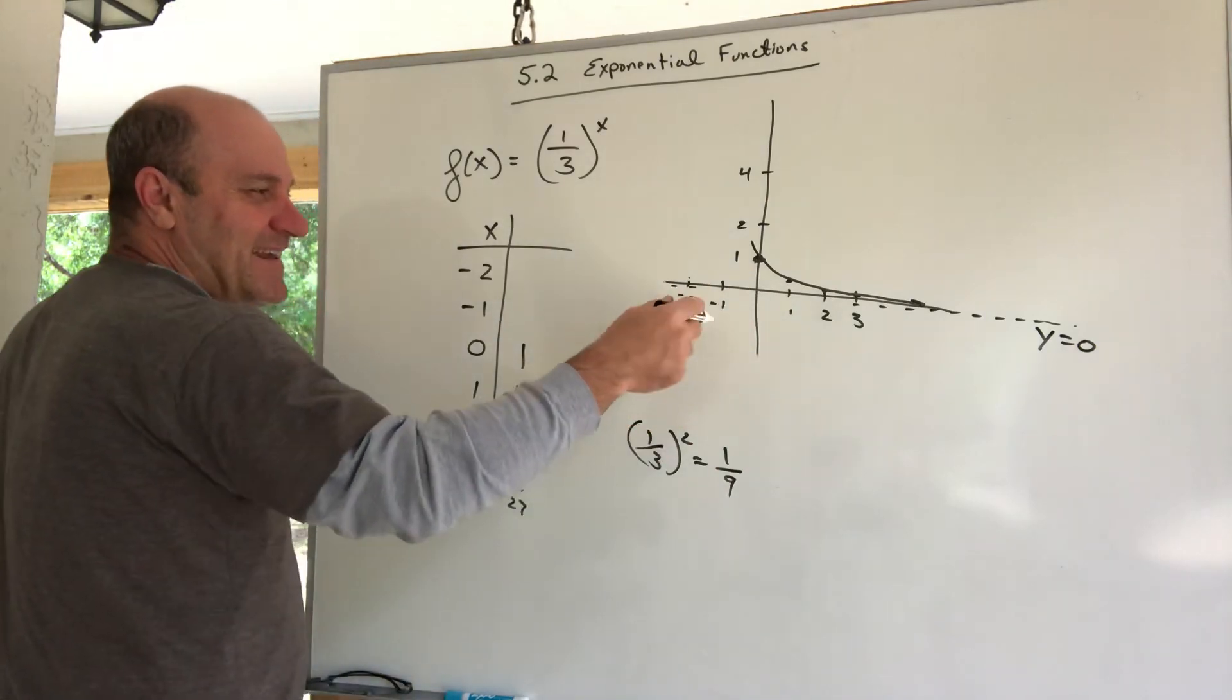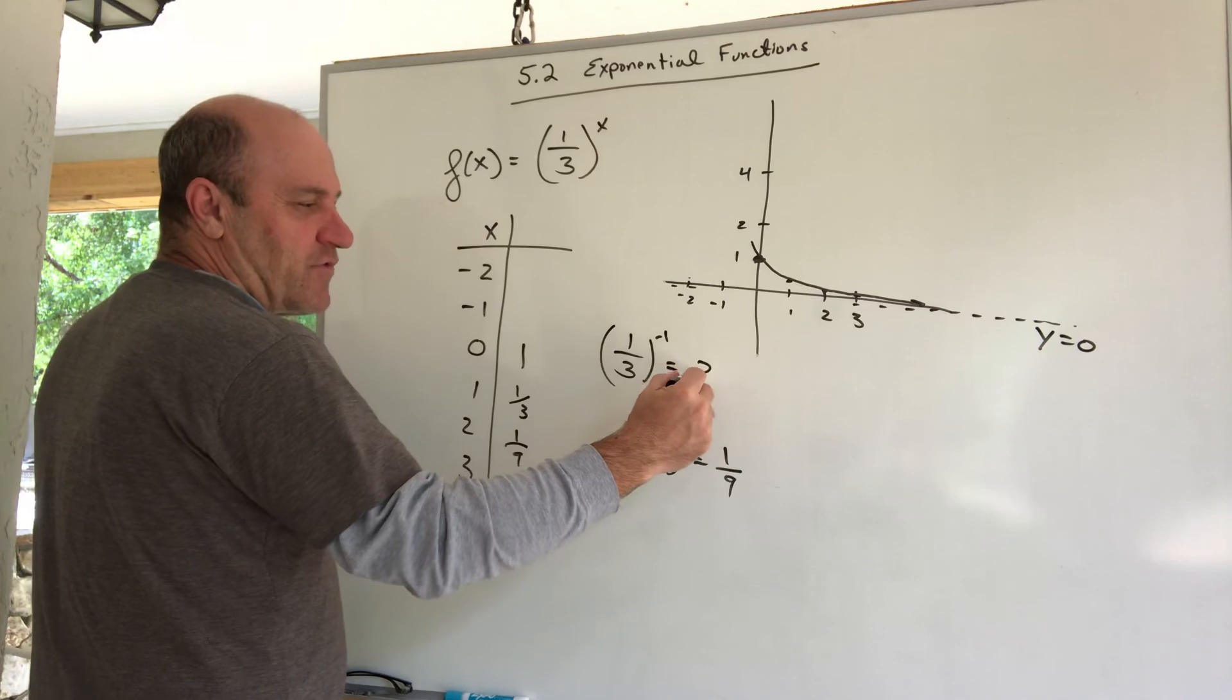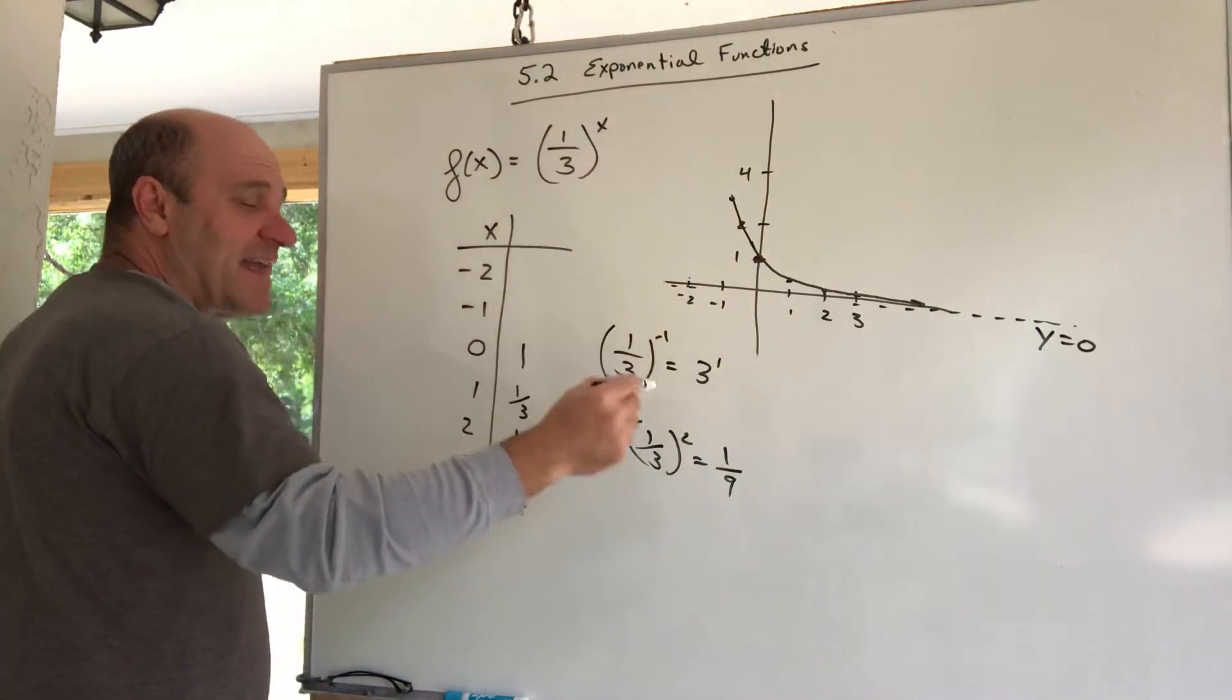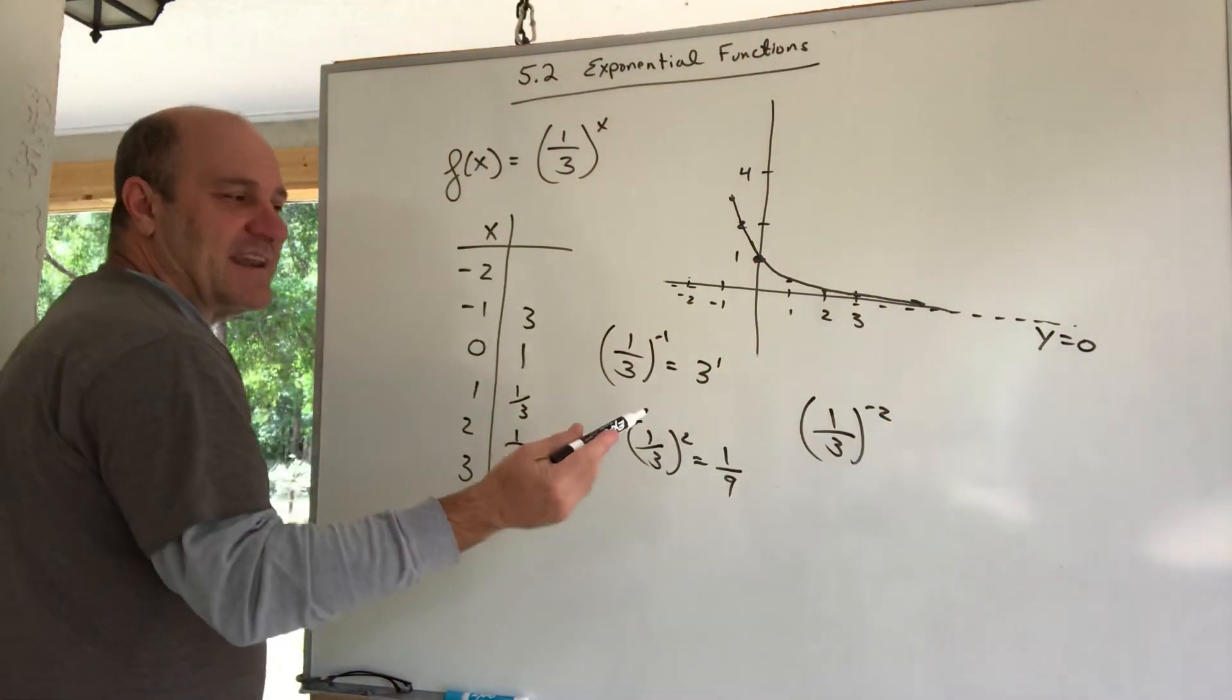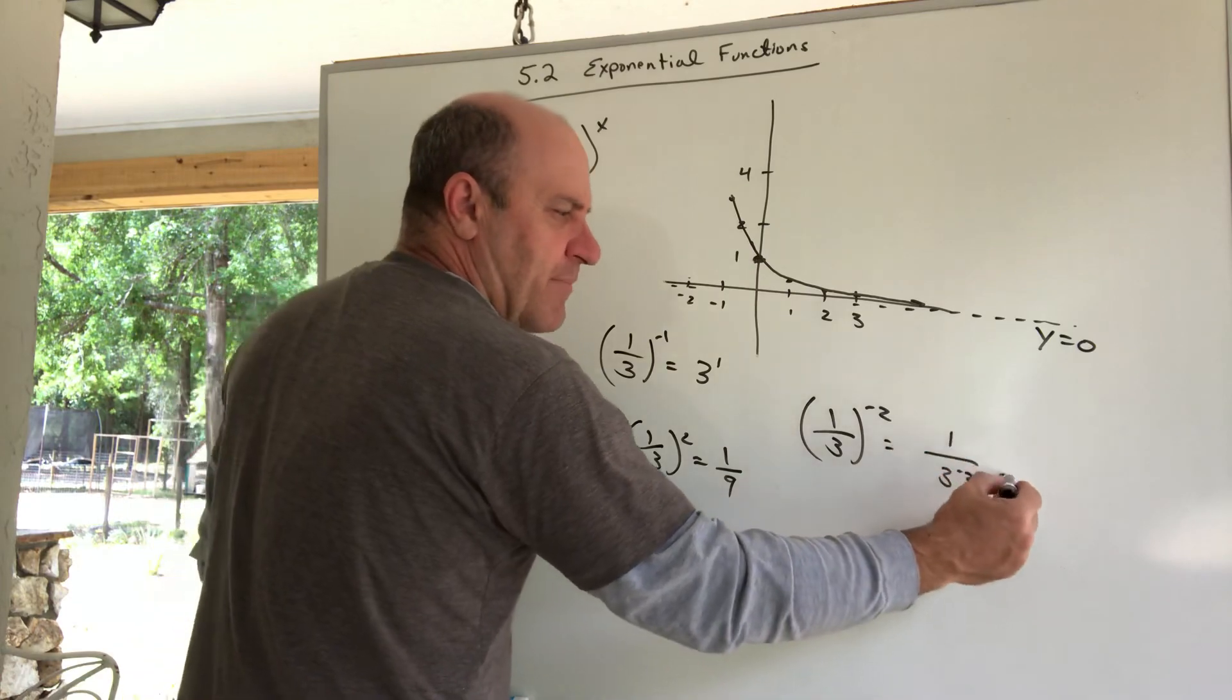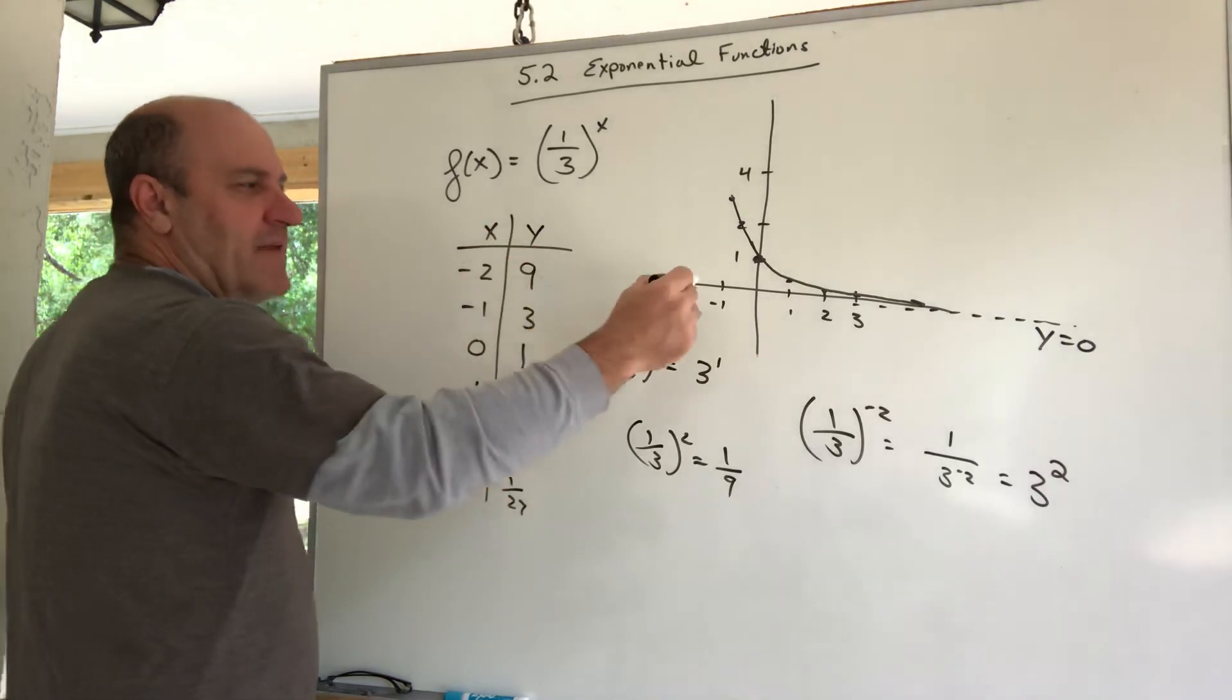Now over here, when you plug in a negative one, this is where your calculator is kind of helpful. What that means is one third to the negative one is three to the positive one, and so we get a three. When I plug in a negative two, one third to the negative two, I'm going to get a nine. That's one in the numerator and three to the negative two, then you move this up and call it three to the positive two. You got to review your exponent rules.